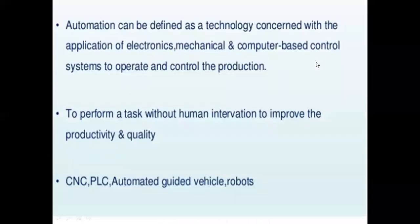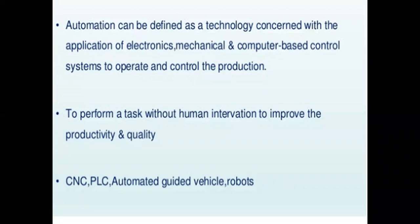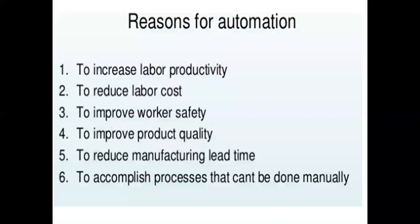Automation in production lines is defined as a technology that performs tasks without human intervention to improve productivity and quality. CNC machines, PLCs, automated guided vehicles, and robots are the heart of automated production lines.